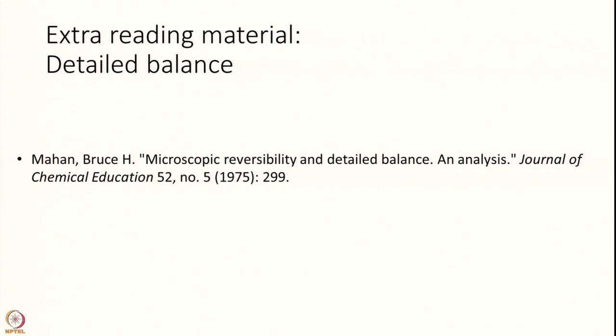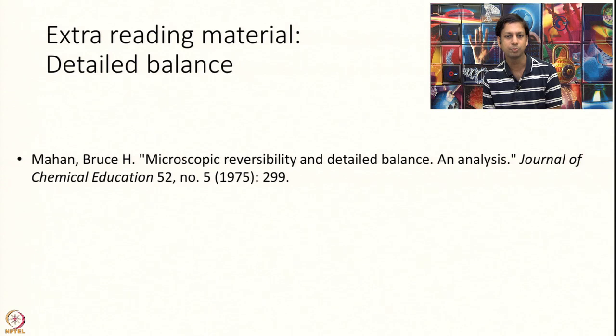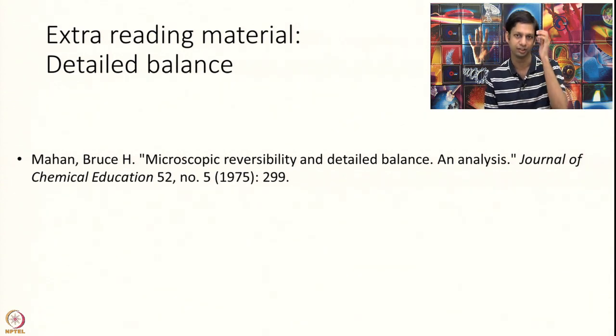You can find a very beautiful paper written by Bruce Mahan in 1975 titled Microscopic Reversibility and Detailed Balance. What I am covering today in the next maybe 15-20 minutes is a much simpler proof than is provided in this paper as applicable to collision theory. But for those who are interested can go to this paper and read the full proof. The more interested readers can look at this paper.